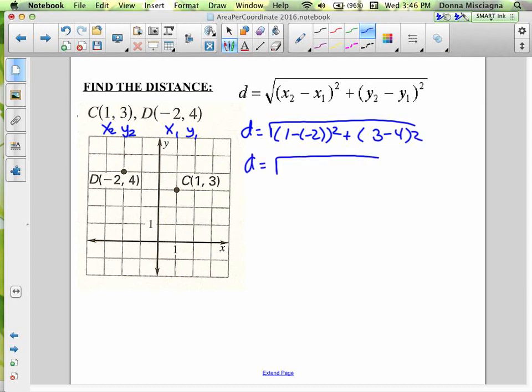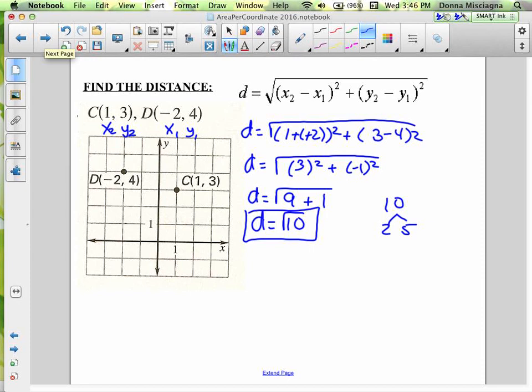The distance is the square root of 1 minus a negative 2 squared plus 3 minus 4 squared. 1 minus a negative is the same as 1 plus 2, so that would be 3 squared plus negative 1 squared. 3 squared is 9, negative 1 squared is 1. This is the square root of 10. And 10 breaks down to 2 and 5. We have no like factors, so that's all we can do. That's as simple as that one gets.